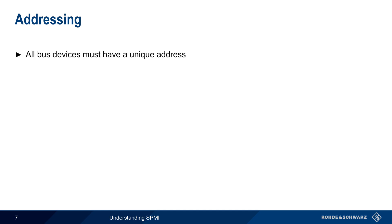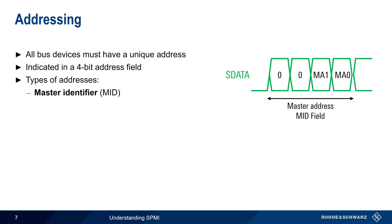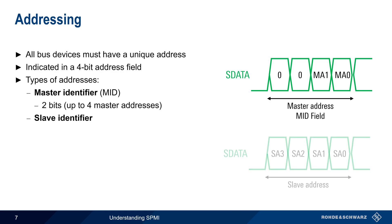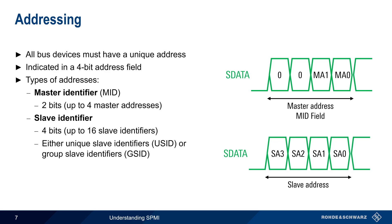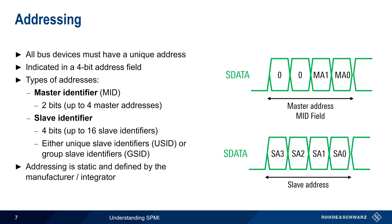Let's talk more about the address field. All devices on the bus must have a unique address, which is indicated in a 4-bit address field. Addresses can be divided into two categories. The first is the master identifier, which consists of 2 bits, or 4 total master addresses. The second is the slave identifier, which uses all 4 bits, and thus permits up to 16 slave identifiers. These can be either individual or group identifiers. Note that addressing in SPMI is static, and is defined by the manufacturer or by the system integrator.